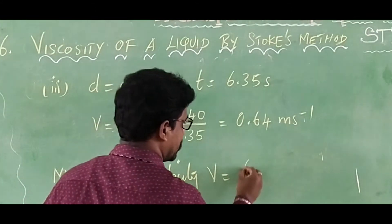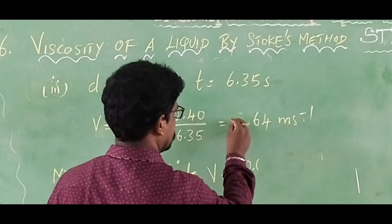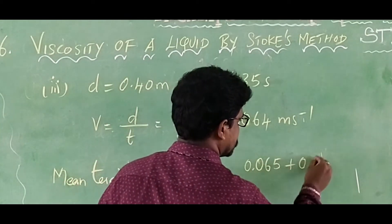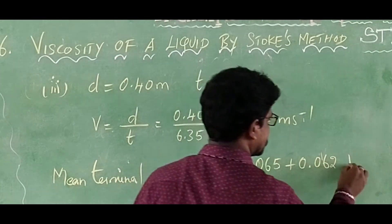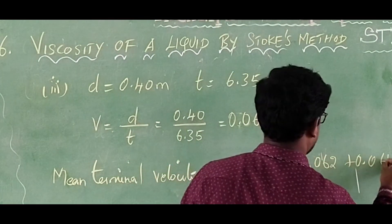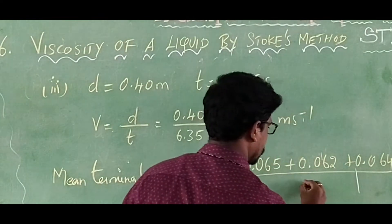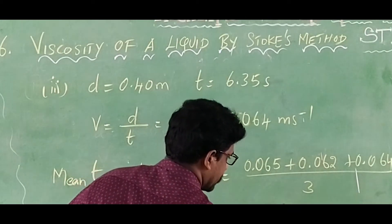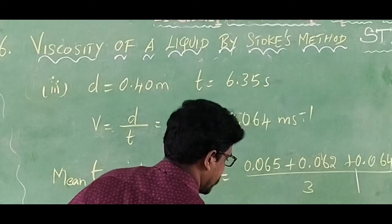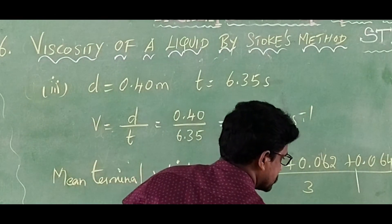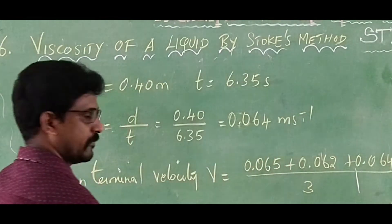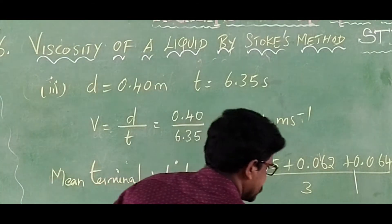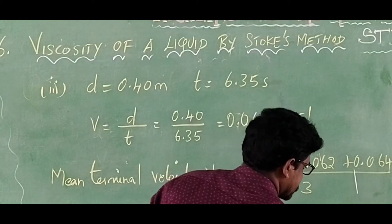The mean terminal velocity is calculated by summing all three values: 0.065 plus 0.062 plus 0.064. The mean terminal velocity v̄ equals 0.191 divided by 3, which equals 0.063 meters per second.